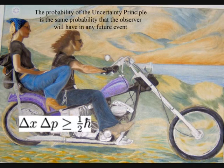The second postulate is that Heisenberg's uncertainty principle that is formed by the wave function is the same uncertainty that we have with any future event.